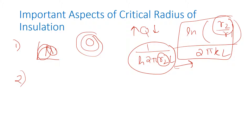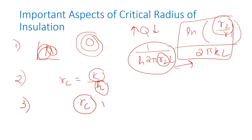The second aspect is that critical radius is independent of pipe radius. We have seen in the formula that r_c = k/h, which depends only on thermal conductivity of insulation k and the convective heat transfer coefficient h of the exposed surface. Third aspect: if we want insulation to reduce heat transfer, we must check the critical radius and vary the thickness of insulation accordingly. Also, heat transfer will always reduce on application of insulation on a plane wall.